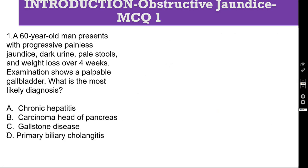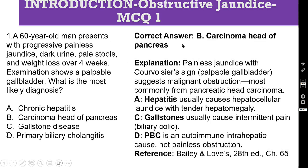MCQ number one: A 60-year-old man presents with progressive painless jaundice, dark urine, pale stool, and weight loss over 4 weeks. Examination shows a palpable gallbladder. What is the most likely diagnosis? The correct answer is carcinoma of the head of the pancreas, because the jaundice is painless and progressive, and Courvoisier's sign — the palpable gallbladder — suggests malignant obstruction, most commonly from pancreatic head carcinoma.